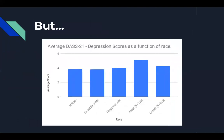Interestingly, while internal consistency was comparable across races in the study by Norton in 2007, participants of Asian descent scored significantly higher on average than participants of African, Caucasian, Hispanic, or Latina descent, who didn't differ from each other on the depression subscale. This might indicate that culture, especially a collectivistic culture, might have an effect on how they rate themselves on depression using the DASS-21.